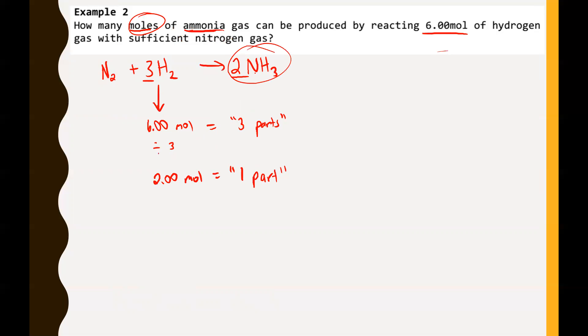What we're looking for is how many moles of ammonia gas. Ammonia gas has two parts. So we want to find out what one part is by dividing this by three. That's going to give us 2.00 moles is one part. And because we have two parts of ammonia gas, we just need to times this by two. That's going to give us 4.00 moles of NH3 or ammonia that are going to be produced.